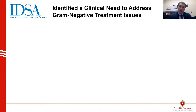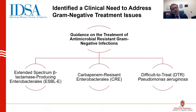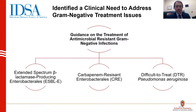With many new agents on the market, the IDSA — the Infectious Disease Society of America — identified a need to create a guidance document on treating gram-negative resistance, published in September 2020. For the first time, they developed a guideline focusing on a broad range of pathogens and recommending particular treatment options. They classified resistant pathogens into three types: extended-spectrum beta-lactamase-producing Enterobacterales (ESBLs), carbapenem-resistant Enterobacterales (CREs), and difficult-to-treat (DTR) Pseudomonas aeruginosa.